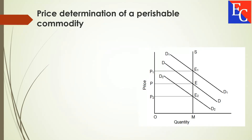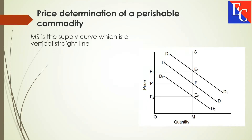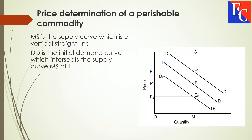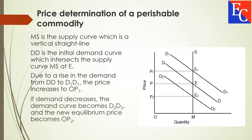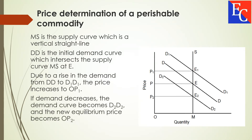The figure shows price determination of a perishable commodity. MS is the supply curve, which is a vertical straight line. Due to a rise in demand from DD to D1-D1, price increases to OP1. If the demand decreases, the demand curve becomes D2-D2 and the new equilibrium price becomes OP2.